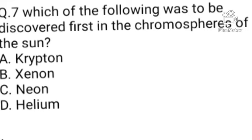Question number 7. Which of the following was first to be discovered in the chromosphere of the sun? Option A: Krypton. B: Xenon. C: Neon. D: Helium. Option D is the correct answer. Helium was first to be discovered in the chromosphere of the sun.